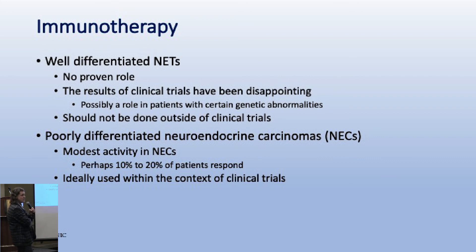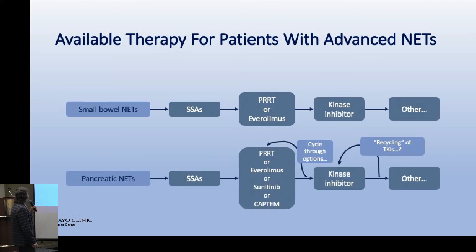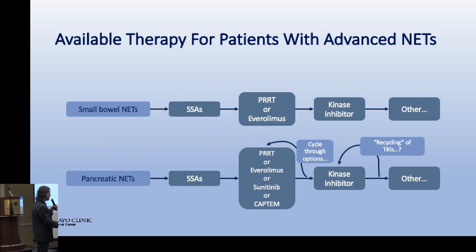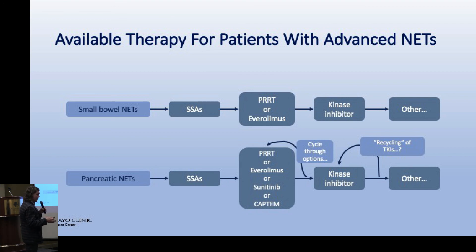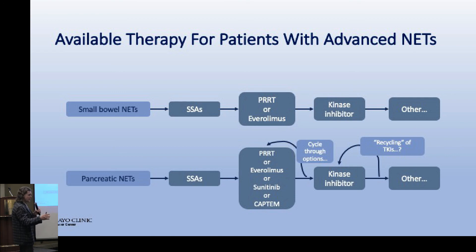Immunotherapy sadly does not work for well-differentiated neuroendocrine tumors, though we will get better immunotherapy and figure out how to combine it with other drugs. For treatment sequencing: small bowel neuroendocrine tumors start with somatostatin analogs, then PRRT or everolimus, then possibly a kinase inhibitor like cabozantinib or surufatinib. Pancreatic NETs have more options including capecitabine and temozolomide, and we can cycle through options - sometimes revisiting drugs two or three years later.